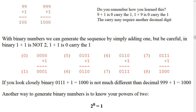Start with binary 5 — 0101 — and add 1. Remember: 1 plus 1 is 0, carry the 1. The result is 6, or 0110. Take binary 6 — 0110 — add 1 and you get decimal 7, or binary 0111. Now start with decimal 7, binary 0111, and add 1. Each column: 1 plus 1 is 0, carry the 1 — three times — and the final carry expands the number of binary digits. So binary 8 is 1000. Binary 0111 plus 1 equals 1000, just as decimal 999 plus 1 equals 1000.